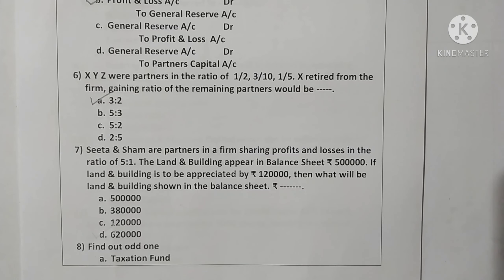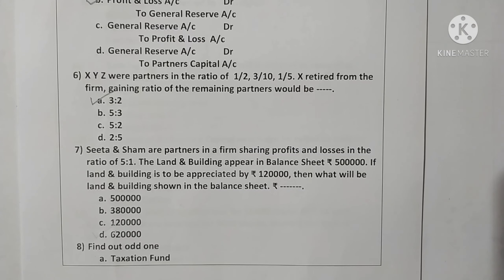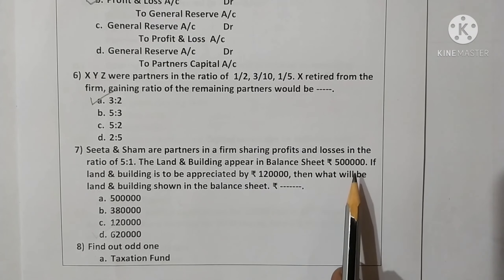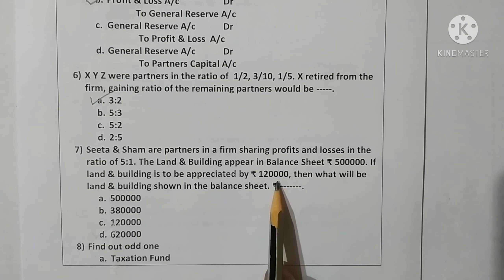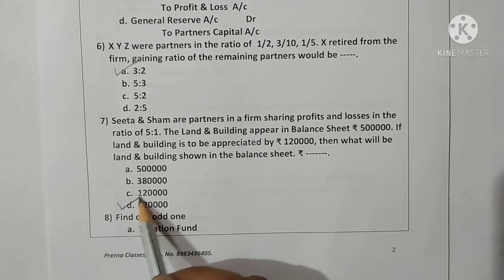Question seven: Sita and Shyam are partners sharing profits and losses in ratio 5:1. Land and building appears in the balance sheet at Rs. 5 lakhs. If land and building is to be appreciated by Rs. 1,20,000, then the value shown in the balance sheet will be 5 lakhs plus 1,20,000 equals Rs. 6,20,000. Here option D is correct.